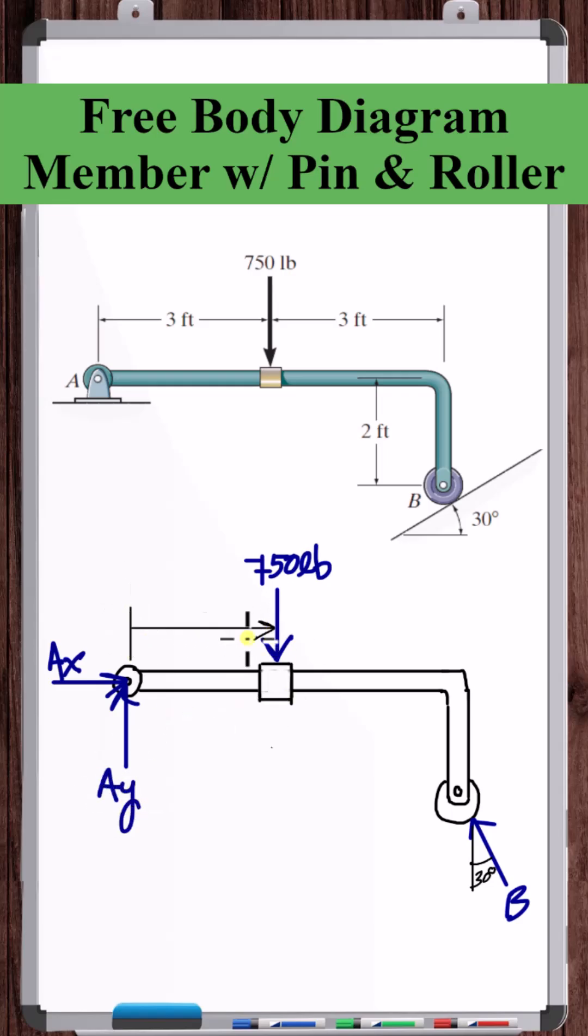Now let's add dimensions. Put the positive coordinate directions. And that's the free body diagram.